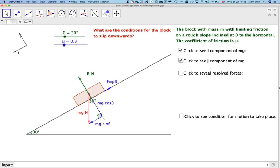So to reveal the resolved forces. If we resolve in the i direction, it will be mg sin theta minus f is equal to mu r. So mg sin theta minus mu r will be equal to zero.